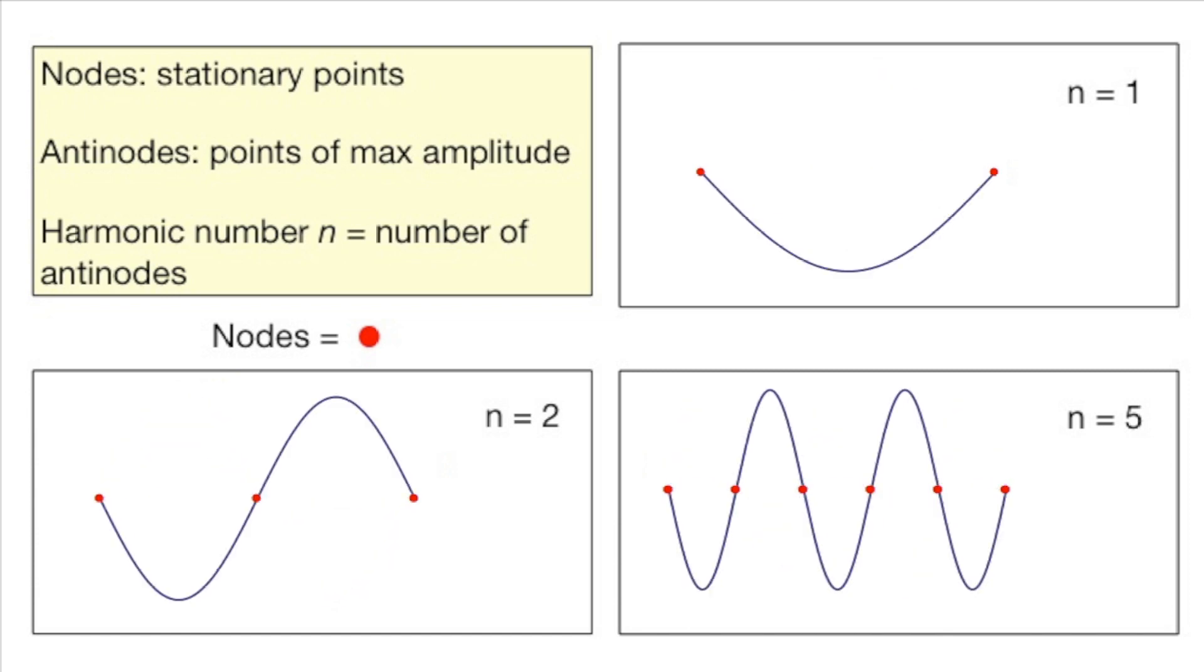The stationary points on the standing wave are called nodes, here marked in red. The points of maximum amplitudes are called antinodes. The harmonic number n is equal to the number of antinodes.